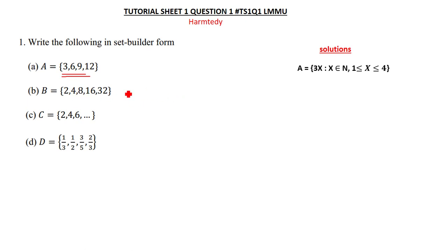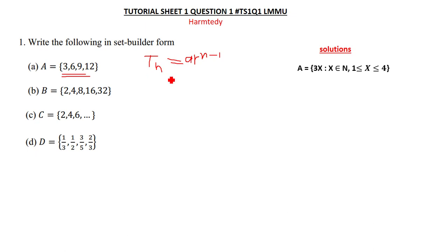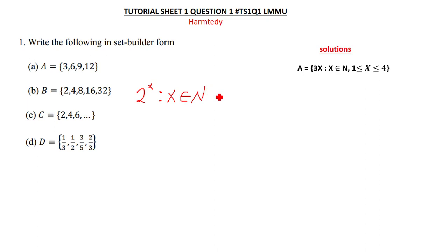Using the GP formula, to find the nth term you use a times r to the power n minus one. When you apply this — or use inspection — you discover that the formula here is 2 raised to the power x. So we write: 2^x, such that x is a member of the natural numbers, where x ranges from 1 up to 5.